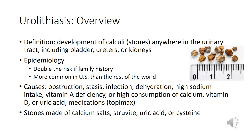Urolithiasis is another term for kidney stones of the urinary tract. Stones can develop anywhere along the urinary tract including the kidneys, ureters, bladder, and even the prostate. There is a higher risk for kidney stones with a positive family history. Interestingly, stones are more common in the United States than anywhere else in the world, which correlates with the American diet. A high sodium diet — whether added salt or hidden sodium in foods — can put you at risk for stones.